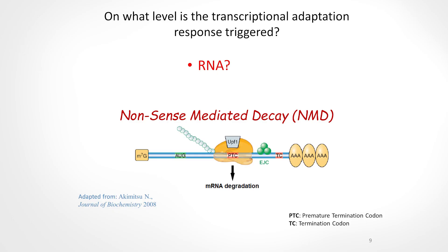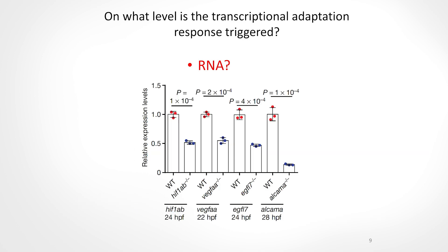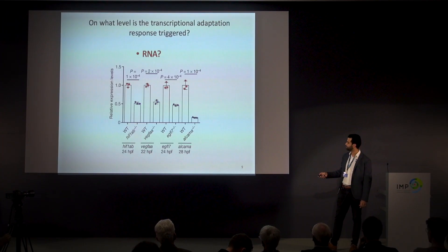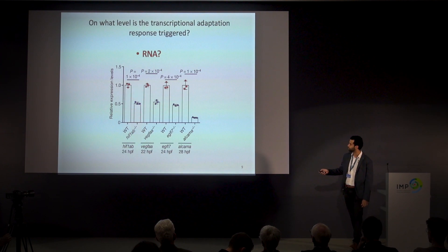So we turned to think about consequences of the presence of mutant mRNA molecules. Most of the mutations we studied were generated by CRISPR, leading to indels that cause frameshifts, which eventually lead to premature stop codons. The cell has a machinery that can detect premature stop codons, and once it detects them, it directs the RNA for degradation. We observed this mRNA decay happening in all of the models we were studying. For example, analyzing HIF-1AB mutant transcript levels showed they are downregulated by 50% compared to wild type.